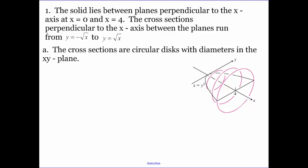Our first example: the solid lies between planes perpendicular to the x-axis at x equals zero and x equals four. Our function is y equals negative root x and positive root x. The cross-sections are circular disks with diameters in the xy-plane. We need to figure out the area of one of these figures in terms of x.